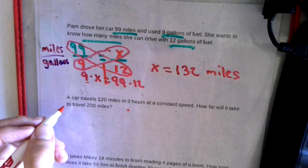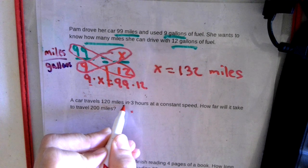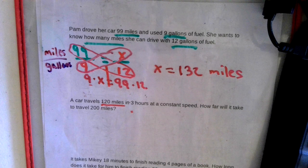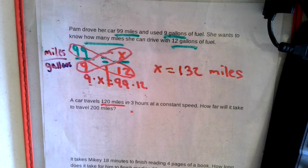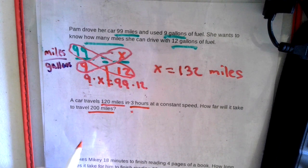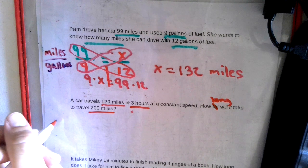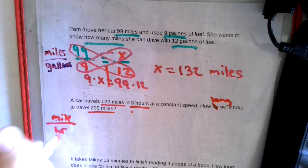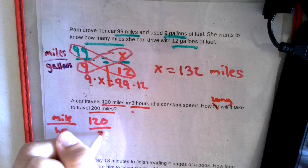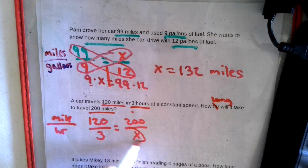A car travels 120 miles in three hours at a constant speed. How long will it take to travel 200 miles? So now we have to look at the important pieces. So a car travels 120 miles in three hours. We have miles to hours, so 120 miles and three hours go together, and we were given the 200 miles for X hours. So now we have a proportion to solve.